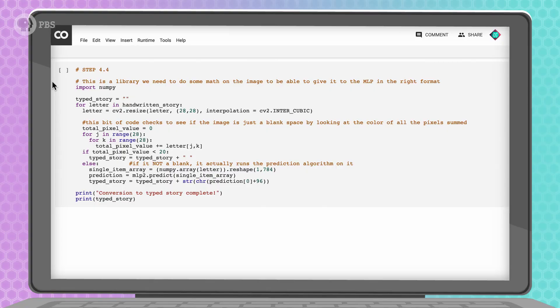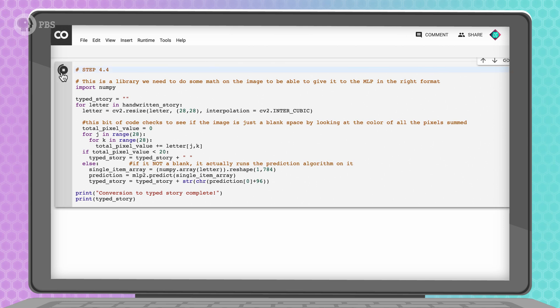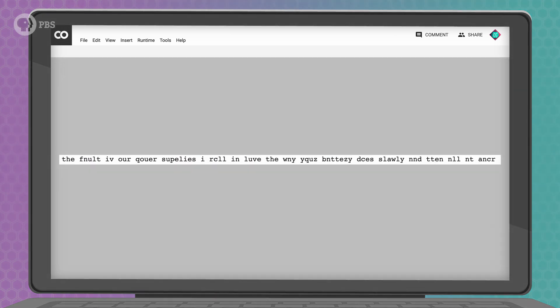So, we'll just check each image to see if it's a blank space. And if it is, we'll add a space to our story. This looks better. There are separate words, and I can tell that the first word is the. But, not much beyond that. Something else isn't going right here.